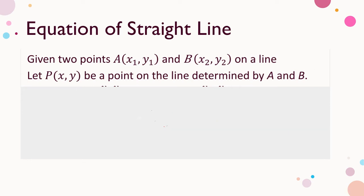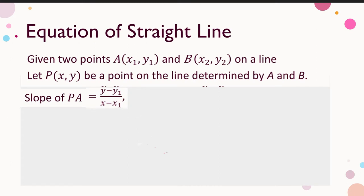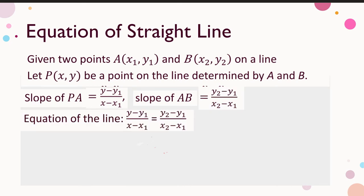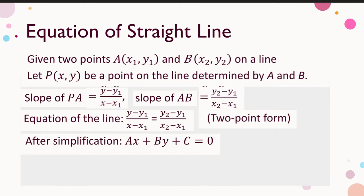Consider the slope formed by A and P, and the slope formed by A and B. Equating these two ratios, we have an equation in x and y. The way of getting the equation is called the two-point form. Simplifying this equation, we have ax + by + c = 0. This presentation clearly shows that the equation is a linear equation in x and y. This equation is called the general form.